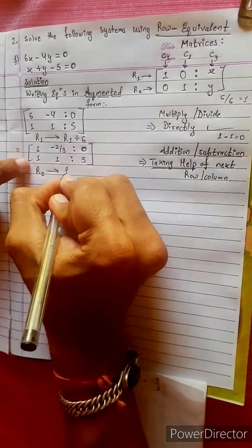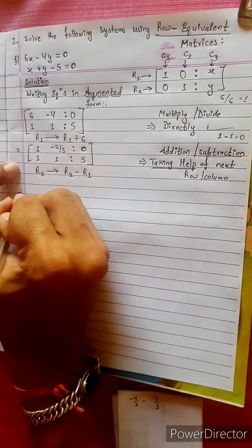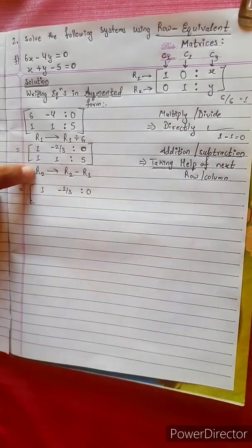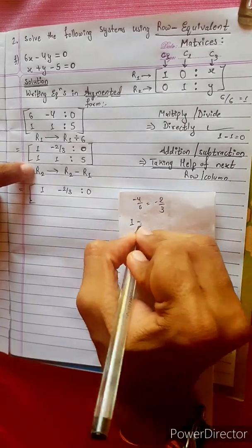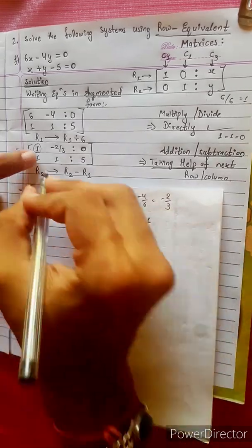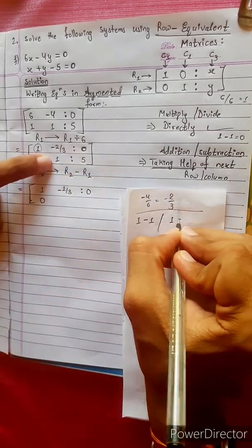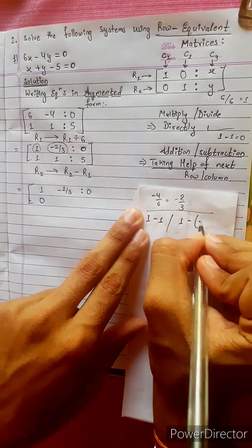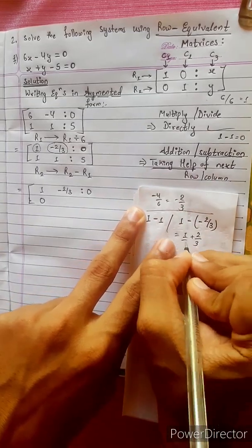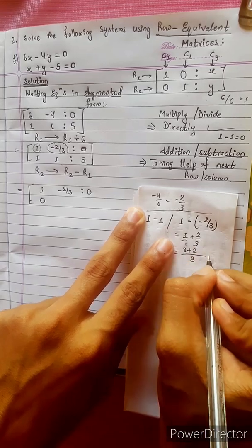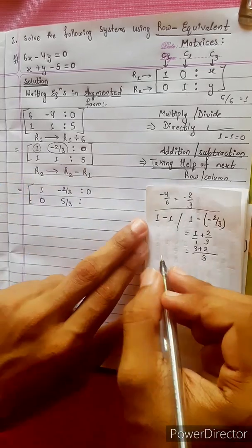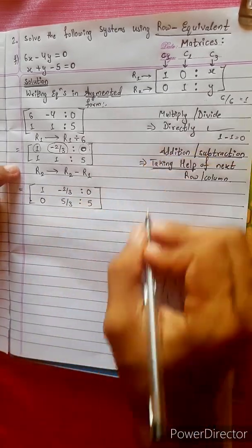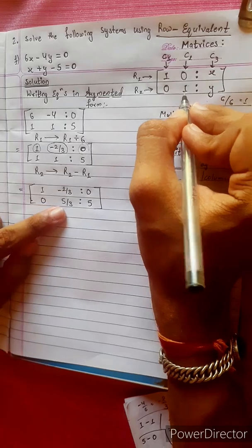R2 changes into R2 minus R1. Computing: 1 minus 0 = 1; 1 minus (minus 2/3) — taking LCM of 3 — gives 1 plus 2/3 = 5/3. Then 0 minus 0 = 0; 5 minus R1 gives 5/6, and simplifying we get 5/3.